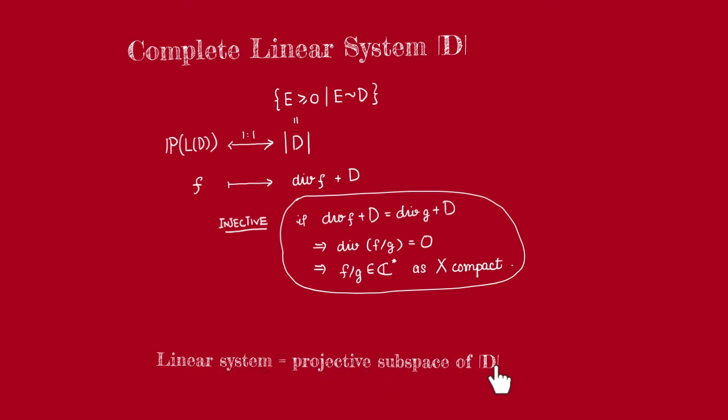Linear systems are just projective subspaces of some complete linear systems associated with some divisor D. For that, we need to review what's the complete linear system and what's the projective space structure associated to it.